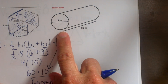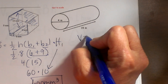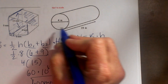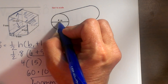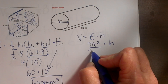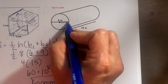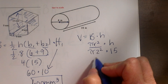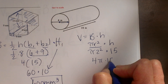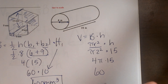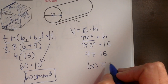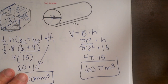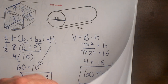Now let's find the volume of a cylinder. The formula is base area times height, where the base area is π r². The diameter is 4 so the radius is 2, and the height is 15. So π times 2 squared times 15: 4π times 15 equals 60π meters cubed.